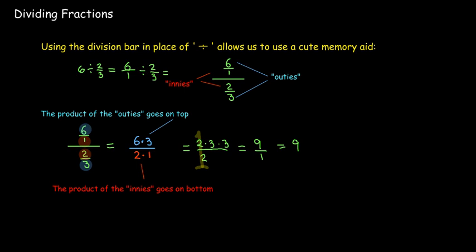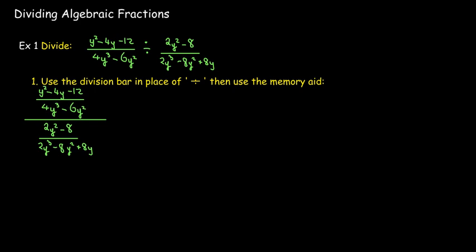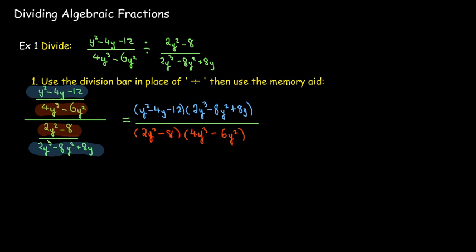And this works great when we have algebraic fractions. So I replace a division sign. If it's not already written with a big division bar, I rewrite it. And then I multiply the outies, put them on top, multiply the innies, put them on the bottom. Now I've just got a multiplication problem. So it's just like multiplying.